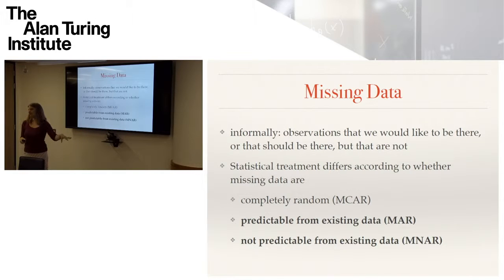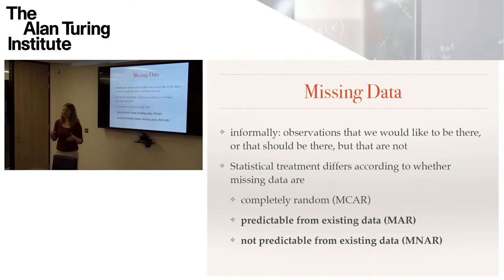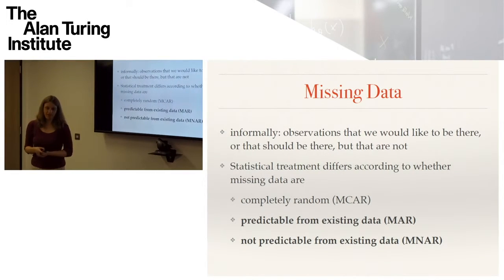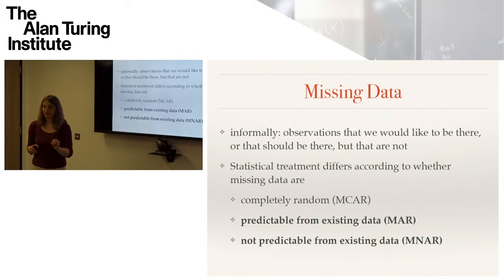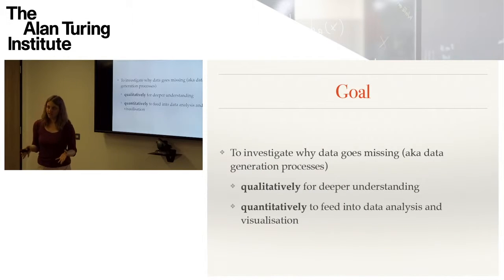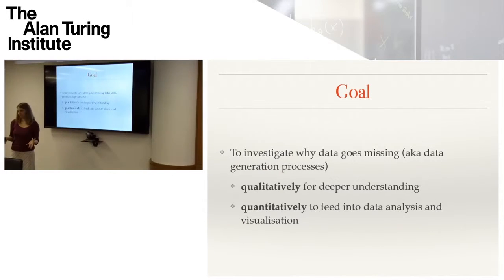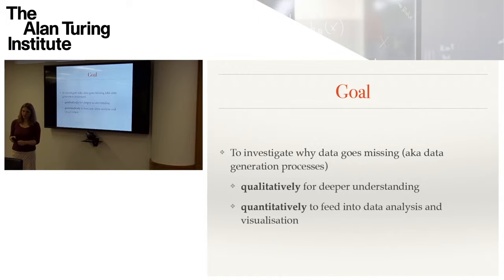Then there are values that can be predicted from existing data — most of the approaches in the literature are about that. And then there's the bane of people's lives: missing data that are not predictable from existing data. That's the kind of data I'm interested in, and that's where data generation processes can come in. Because there is something about the variable where observations are missing itself that makes those observations go missing. My goal in that research is, first of all, to investigate why data goes missing — qualitatively talking to people, and then quantitatively doing statistical modeling to feed into data analysis and visualization solutions.